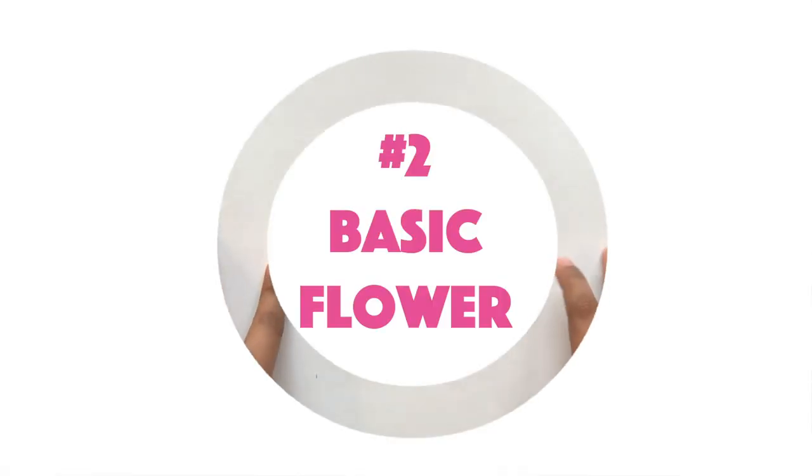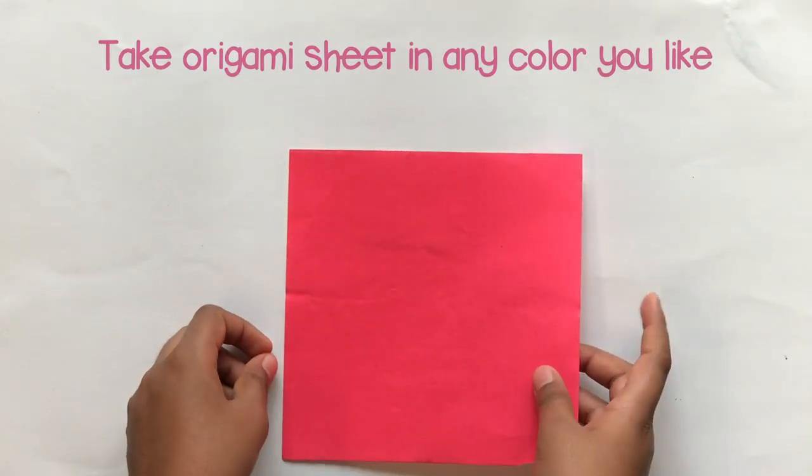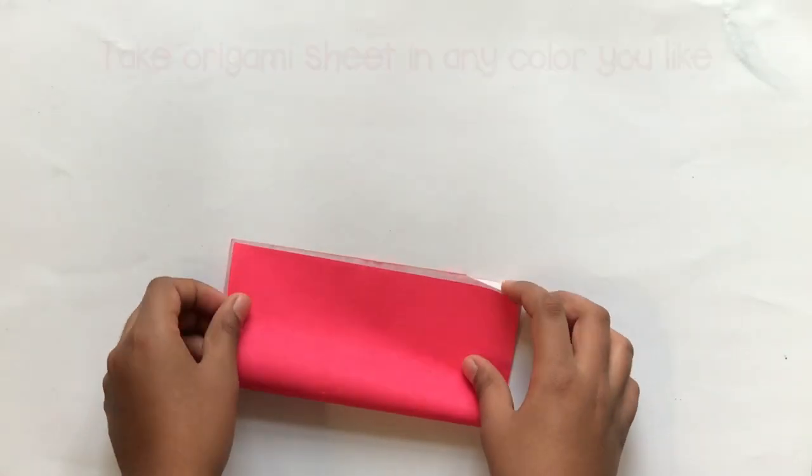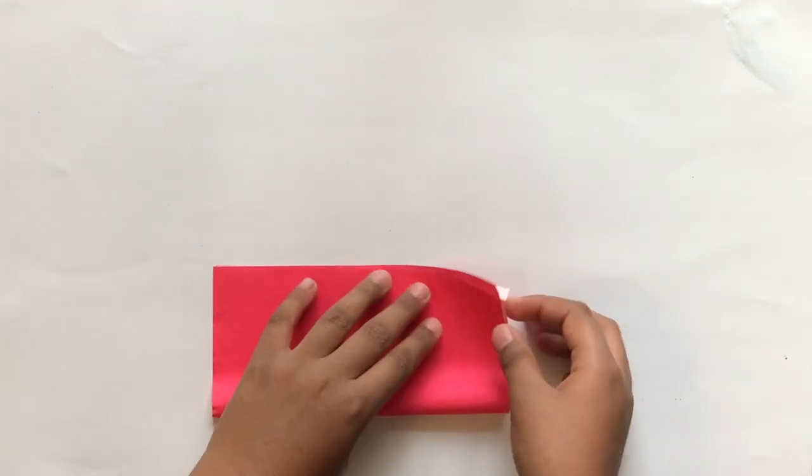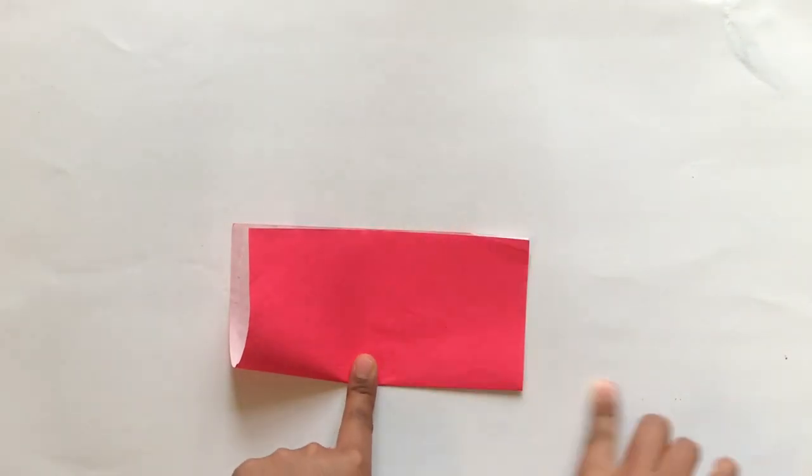So the second one is basic flower design. First you need to take an origami sheet. The color is your choice.